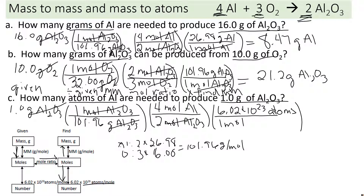The moles of aluminum cancel, giving us our number. Going to the calculator: 1 divided by 101.96, times 2, times 6.02 × 10²³ — since it's 1.0 grams we can only keep two significant figures — that gives us 1.2 × 10²² atoms of Al.